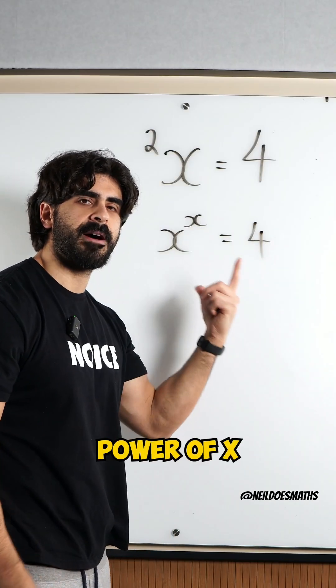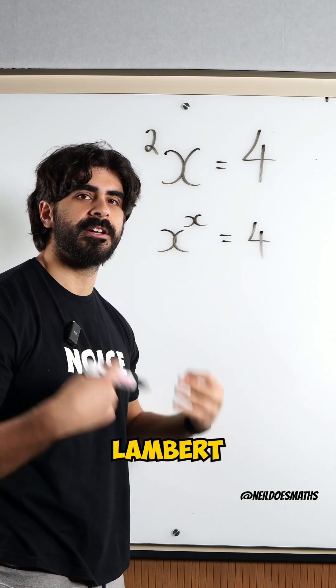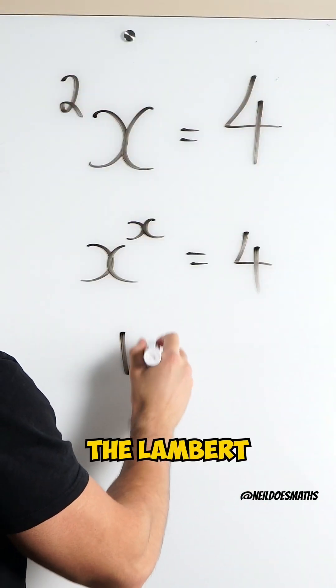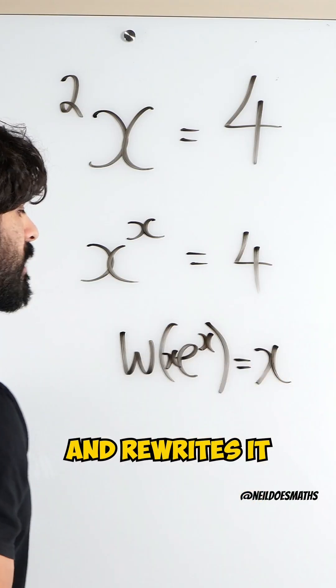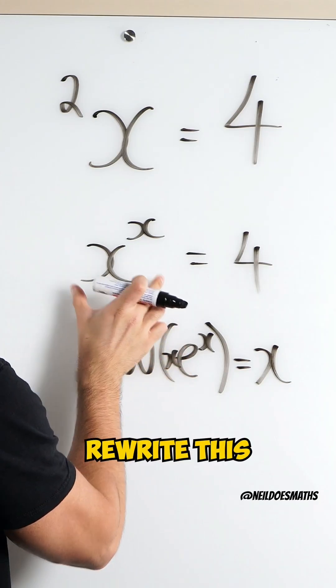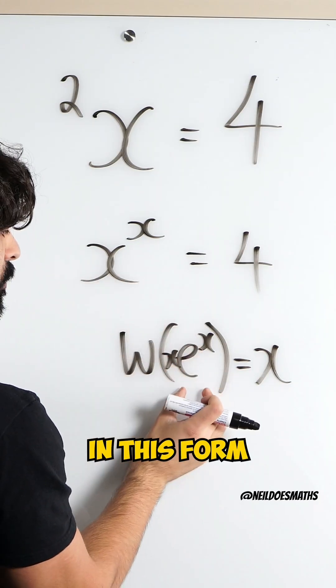Now x to the power of x reminds me of Lambert W functions. The Lambert W function takes a product log and rewrites it as x. So I'm gonna rewrite this in this form.